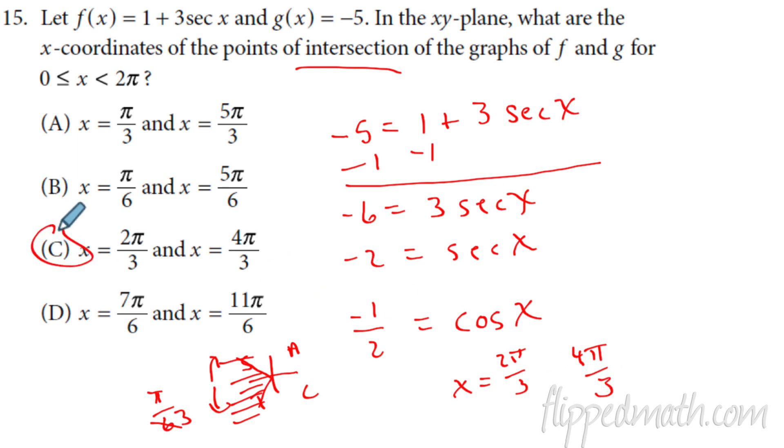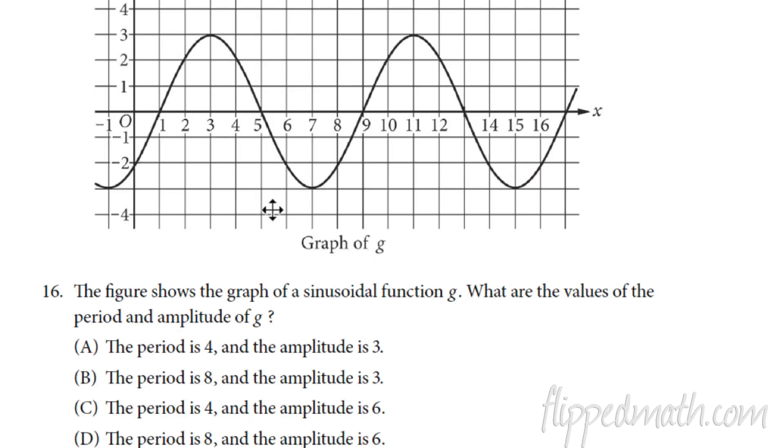Here is another trig graph that we're looking at here. Sinusoidal function. Remember that can be sine or cosine. What are the values of the period in the amplitude of G? Well, first let's do the period. The period is how long it takes to complete one cycle. And the easiest way is just to go max to max, or you can go min to min. Here we go from three to 11. So the period is eight. So that narrows it down to either B or D.